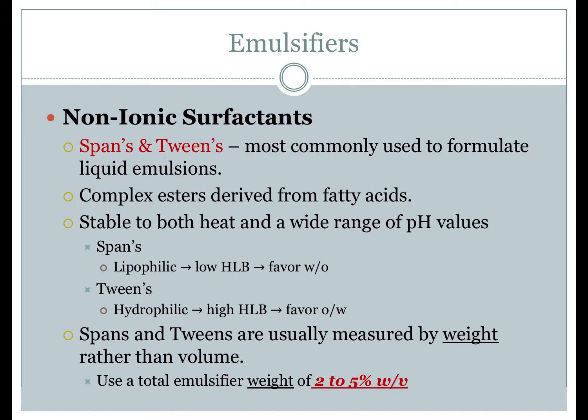For example, sorbitan mono-oleate (also known as Span 80) is a mixture whose primary component is sorbitan mono-oleate. Polysorbate 80 (Tween 80) is a combination of polyoxyethylene-20 combined with sorbitan mono-oleate, where the 20 indicates approximately 20 moles of ethylene oxide per mole of sorbitol and sorbitol anhydride. Spans and tweens are frequently used in compounding because they are stable to heat and stable over a wide range of pH values, making them useful for a wide variety of compounds.